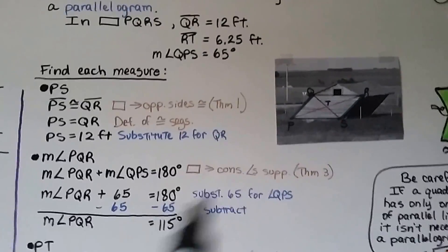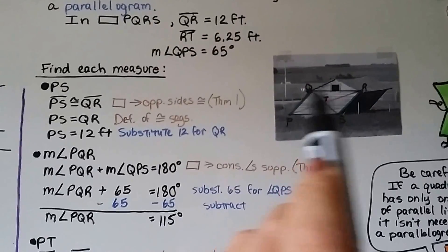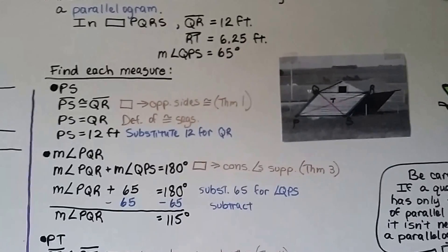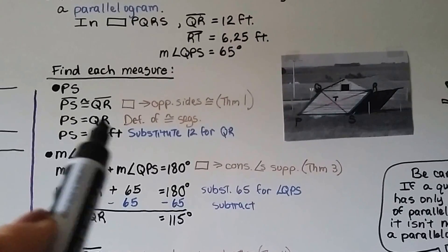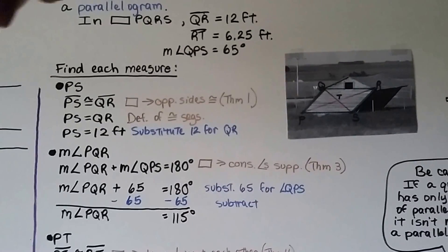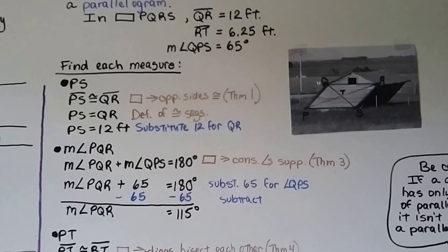So PS, the bottom line here, segment PS is congruent to segment QR because the opposite sides are congruent from theorem one. So that means if they're congruent, they're equal because that's the definition of congruent segments. And if we know QR is 12 feet, then PS is 12 feet. We substitute 12 for QR.